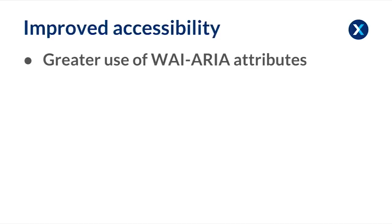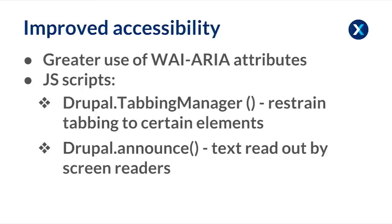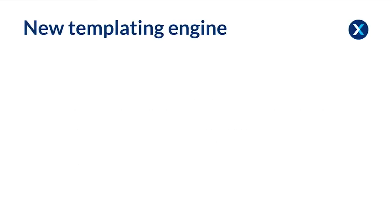There's also been improvement in accessibility — greater use of ARIA attributes, specifically in the content authoring side of things and in the toolbar. There's also been a couple of JS scripts introduced to improve accessibility: the Drupal tabbing manager, which restrains tabbing to certain elements so whenever a user is completing a specific task the keyboard tabbing is restrained to that relevant task. And then you can use Drupal.announce, which is the text you want read out by screen readers, applied to the restrained tabbing.